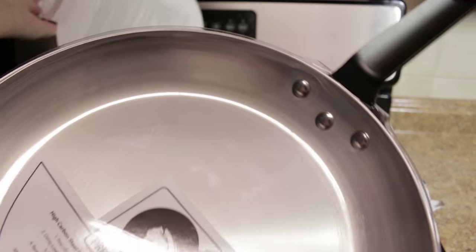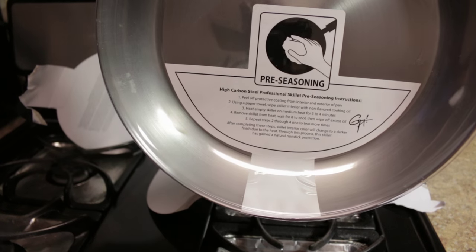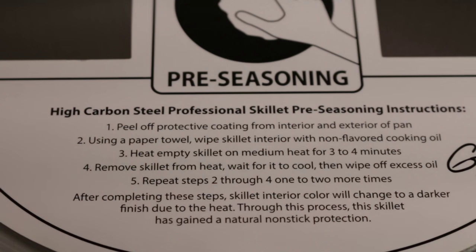So on the pan, it says pre-season, but you still have to remove the protective coating. You can follow the steps here to continue seasoning. First step is to peel the protective coating, then apply oil, heat, and then wipe off the oil when it cools. You're supposed to do this a couple of times.